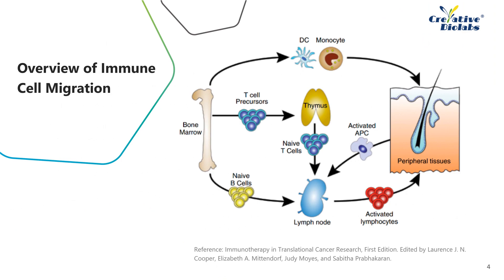Over the decades, our understanding of the migration of many types of immune cells has expanded exponentially. Most immune cells originate from hematopoietic stem cells in the bone marrow. The first phase of migration occurs following their development, upon which cells leave the bone marrow and enter the blood or lymphatic circulation. T lymphocytes are the exception, since they migrate initially to the thymus for completion of development before entering into the circulation. Following development, the migratory behavior of different immune cell populations varies according to their function.